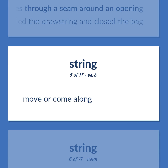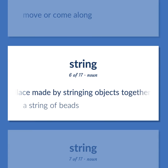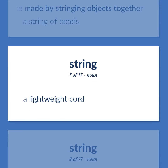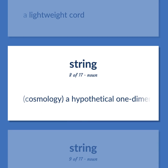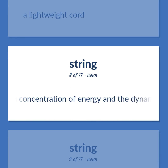Move or come along. A necklace made by stringing objects together. A string of beads. A lightweight cord. Cosmology: a hypothetical one-dimensional subatomic particle having a concentration of energy and the dynamic properties of a flexible loop.